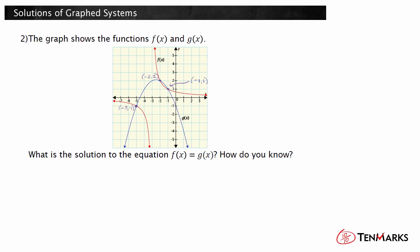So the solution to the equation f of x equals g of x for these two functions are x equals negative 5, negative 2, and negative 1. Now you know more about how to use the graphs of f of x and g of x to find the solutions to the equation f of x equals g of x. Thanks for watching!